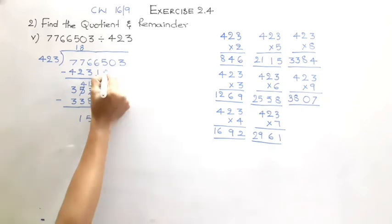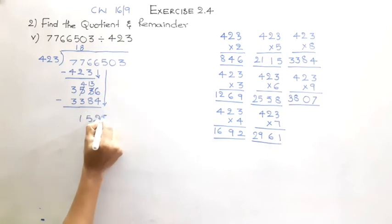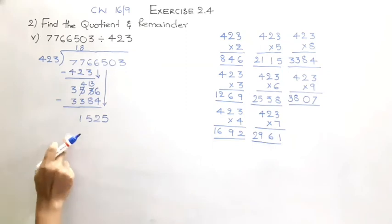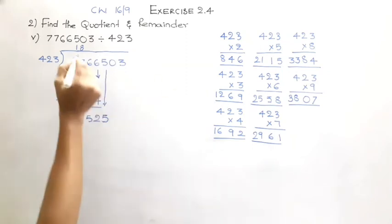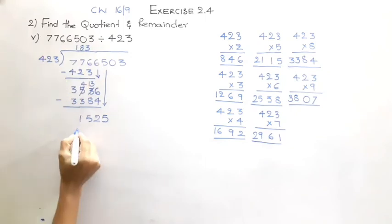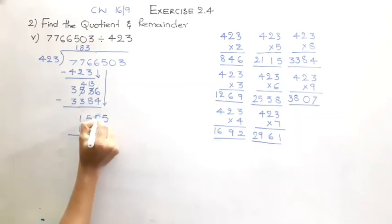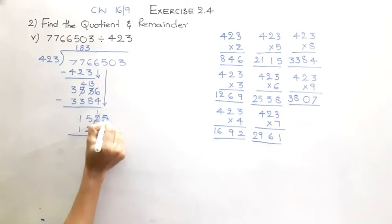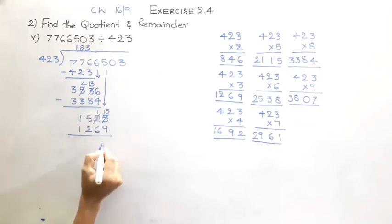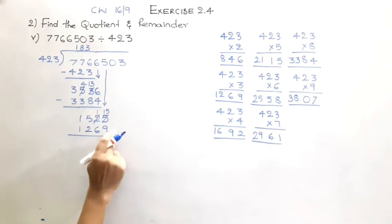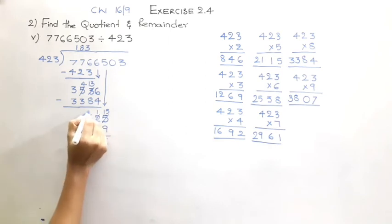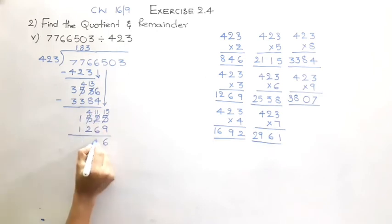We take the next digit of the dividend which is 5, giving us 1525. 423 times 3 is quite close, giving 1269. As we can't subtract 9 from 5, borrow: this becomes 1 and this becomes 15. 15 minus 9 is 6. By borrowing 1, this becomes 4 and this becomes 11. 11 minus 6 is 5.